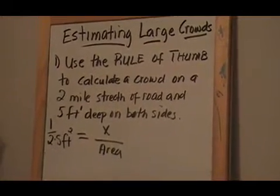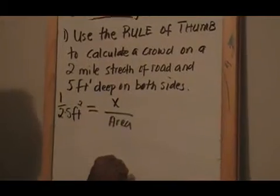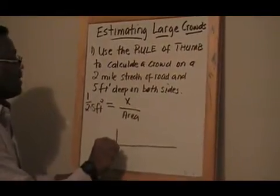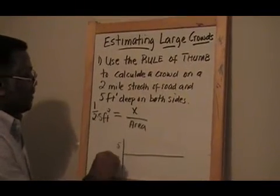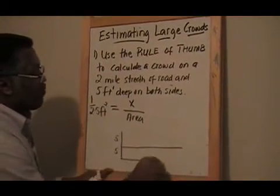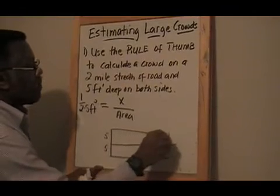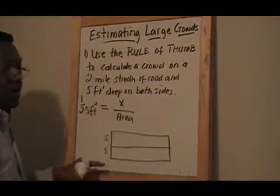All right, so I'll draw a quick figure. Two-mile stretch of road, ten feet deep, five feet deep on both sides. This is five feet, this is five feet. Now, if I draw my rectangle, I've got to find the area of this rectangle.